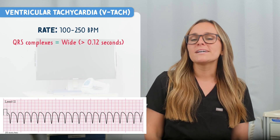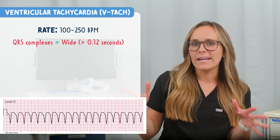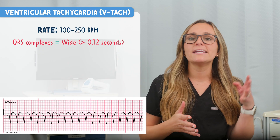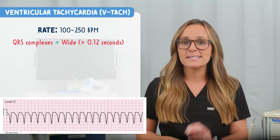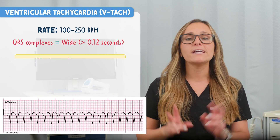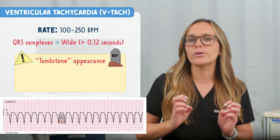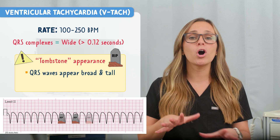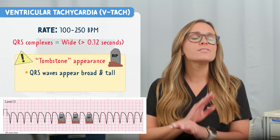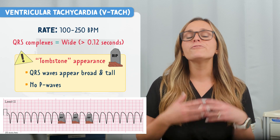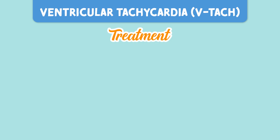The QRS complexes are wide — greater than 0.12 seconds — and they have a tombstone appearance: tall and broad. And there are no P waves.